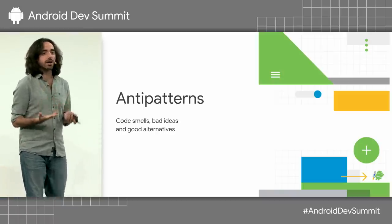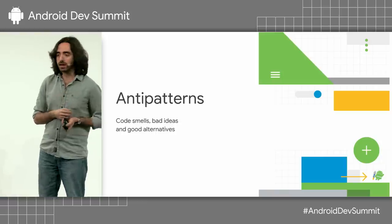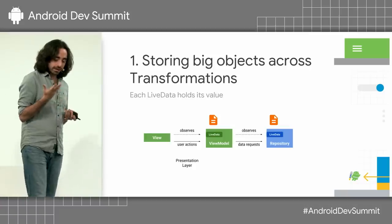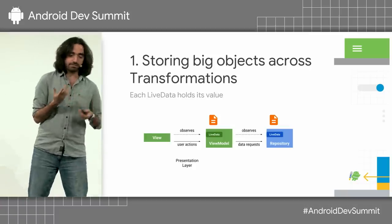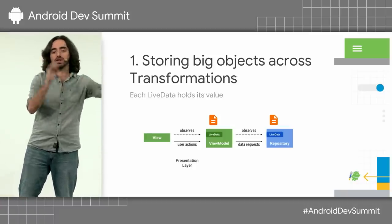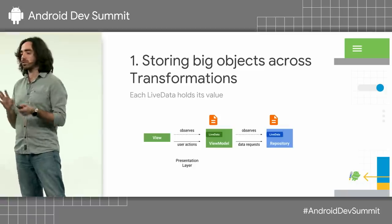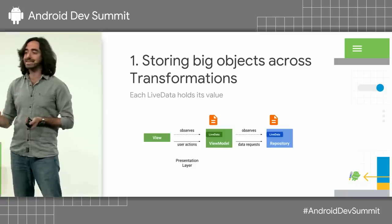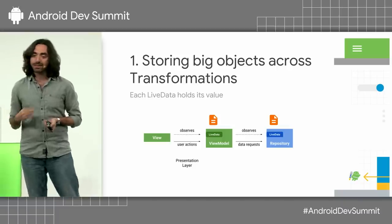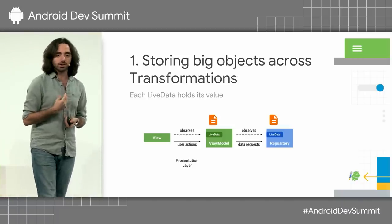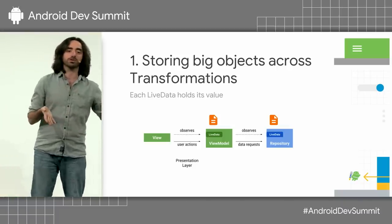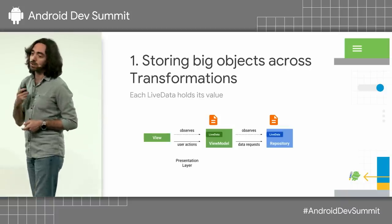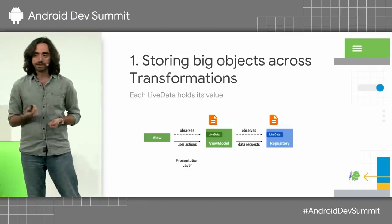There are some common mistakes you can make while using LiveData, and we want to touch on these things. One thing we see a lot is: let's say you make a web request, it returns a giant JSON, and then you convert it to your objects. Using a LiveData transformation for doing that is not a good idea because LiveData is a value holder — the long string you fetch from your server is going to stay in memory. So you probably don't want to use LiveData for something like that. Instead, just do it as a one-shot operation.